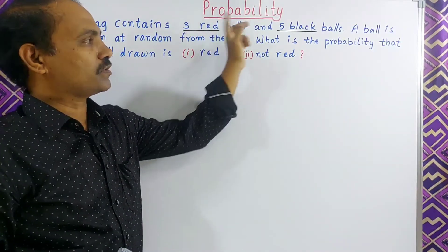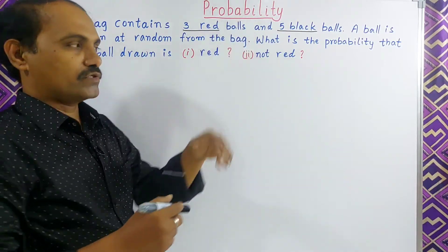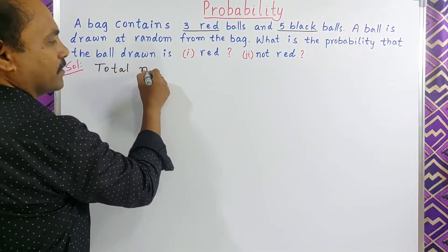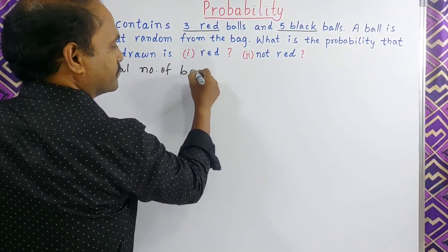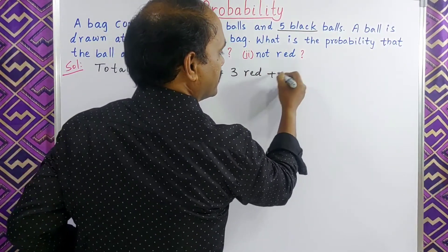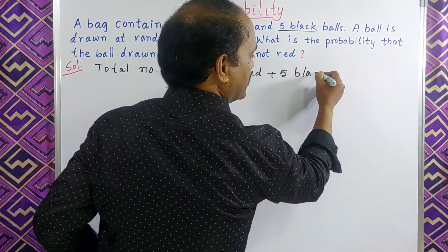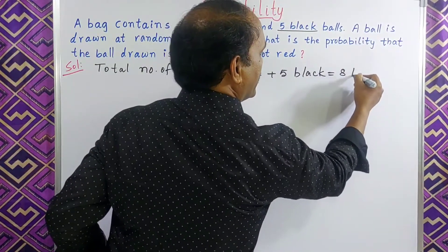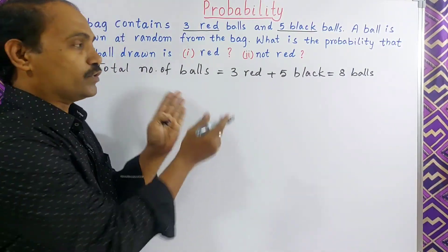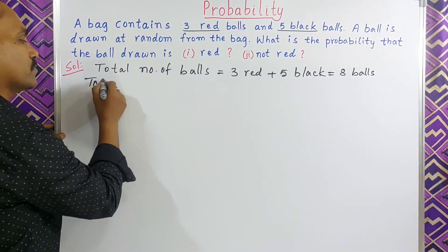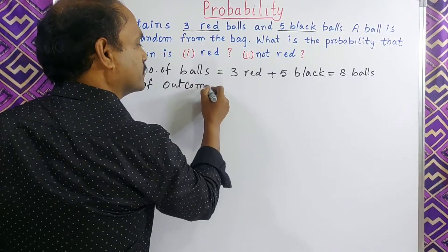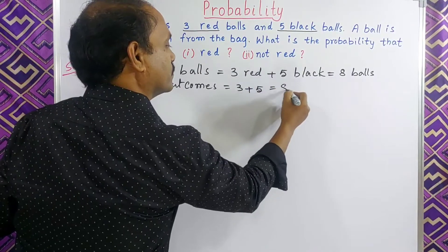Students, here in the bag two colors are there: black and red. So first we will find the total number of balls. How many? 3 red plus 5 black — overall 8 balls are there. So total number of outcomes is equal to 3 plus 5, which is equal to 8.